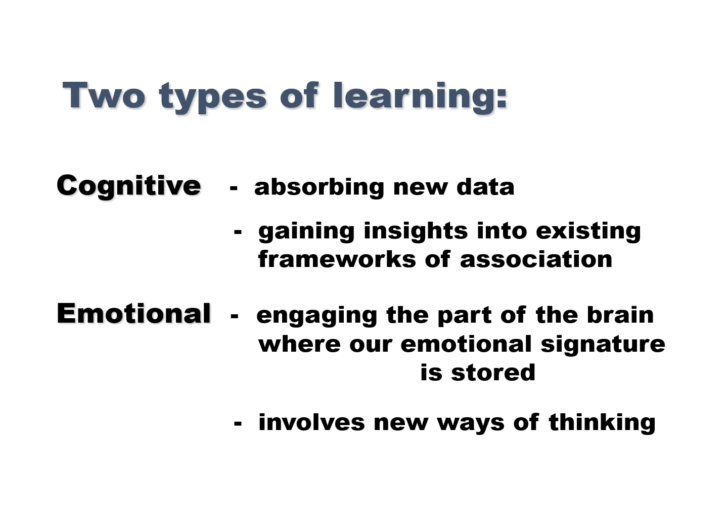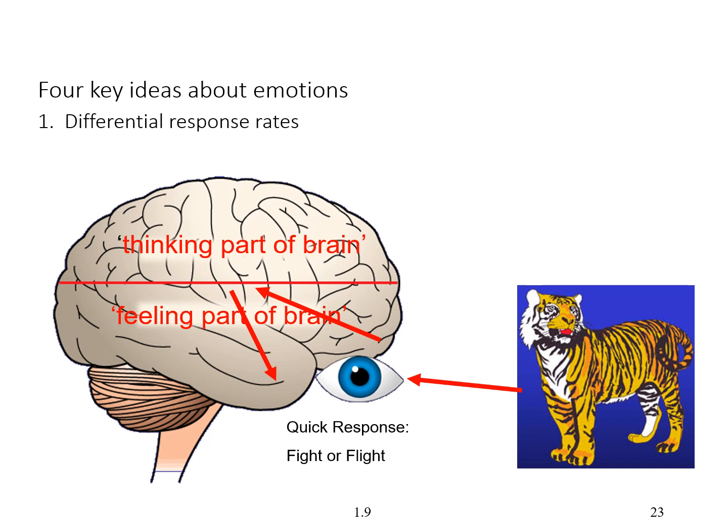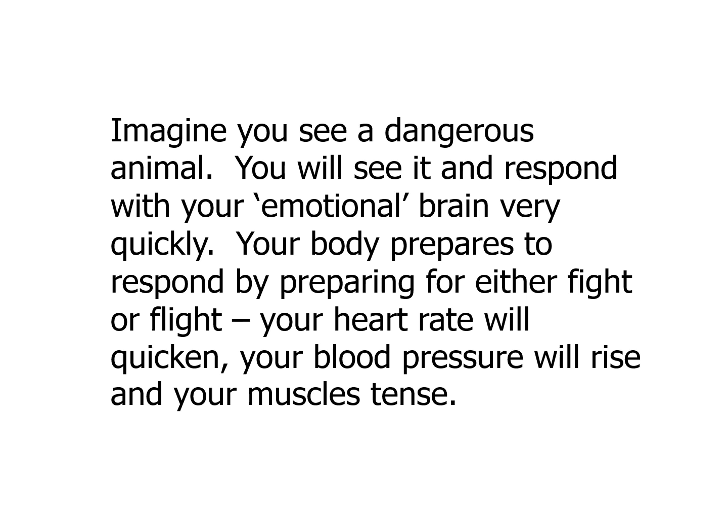We have the thinking part of the brain and the feeling part, which is responsible for that quick fight-or-flight response. When talking to children about this, I get them to imagine seeing a dangerous animal — a big tiger. They see it and respond with the emotional brain very quickly. The body prepares to either fight or flee: heart quickens, blood pressure rises, muscles tense. At a slower pace, the thinking brain might register it's actually a life-size toy and there's no danger — but the body is already ready, and you might have already run.